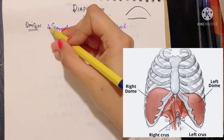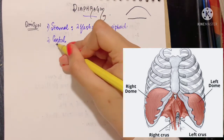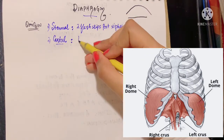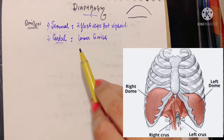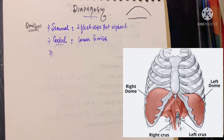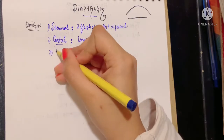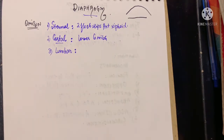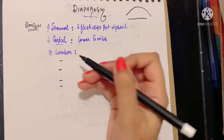The second origin is from the ribs, called the costal origin, occurring from the lower six ribs with their costal cartilages. Finally, the third part of its origin lies in the vertebrae, known as the lumbar part. The lumbar part of the diaphragm's origin consists of four important areas.